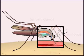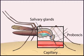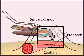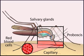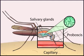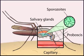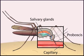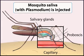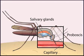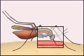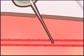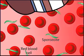An infected female mosquito transfers the parasite to a human when she takes a blood meal. The parasite, in the form of sporozoites, is injected with her saliva, which contains an anticoagulant that promotes a steady blood flow. The circulatory system delivers the sporozoites to their target: the liver.